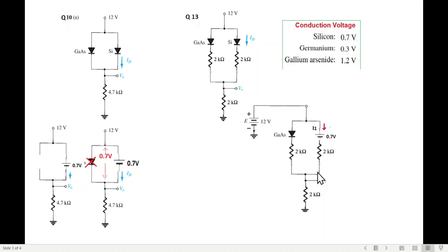And here also, as in this case we have replaced the silicon diode with a 0.7 volt battery, and this current we are calling i1 current.